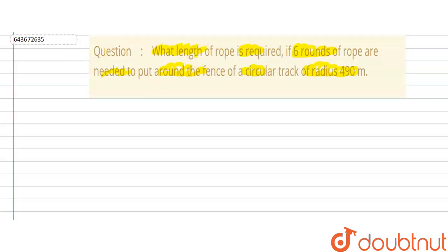We are going to find the length of rope. So we start this question by writing: length of one round of rope will be equal to circumference of the circle. Let this be the circular track, and we need to find the length of rope if 6 rounds of rope are needed, which means 1 round of rope will cover the circumference of the circle.